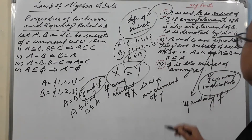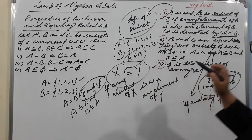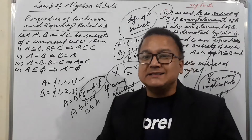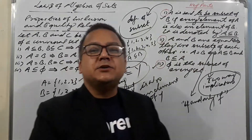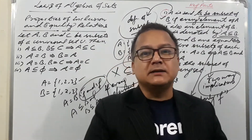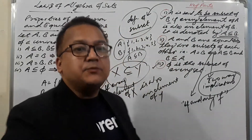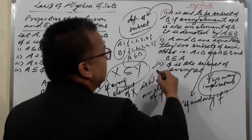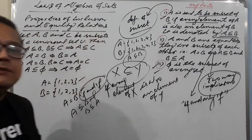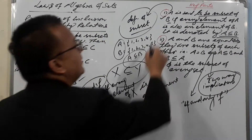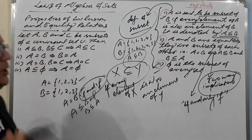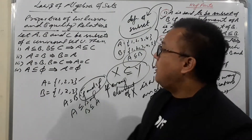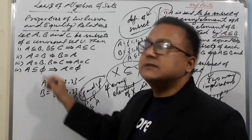The third key point: the empty set φ is a subset of every set. We consider hypothetically that φ is available in every set. So φ is the subset of every set. If we know these three key points, we can very easily do the proofs of all these properties.